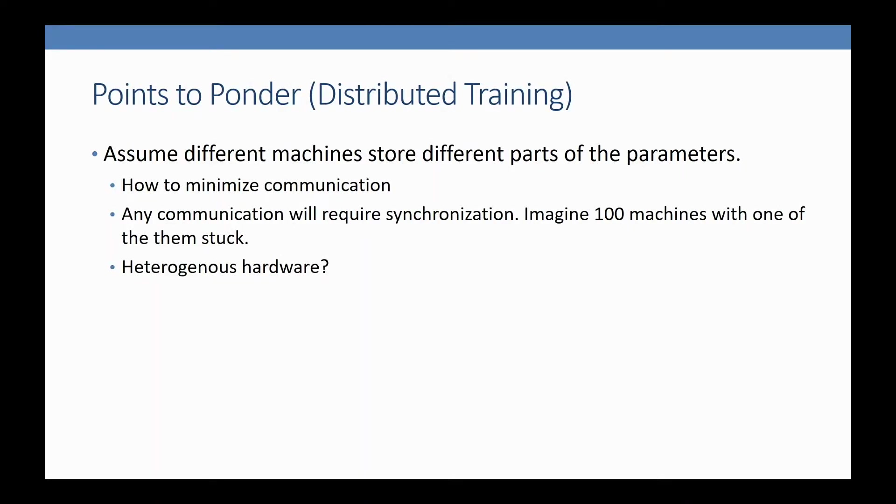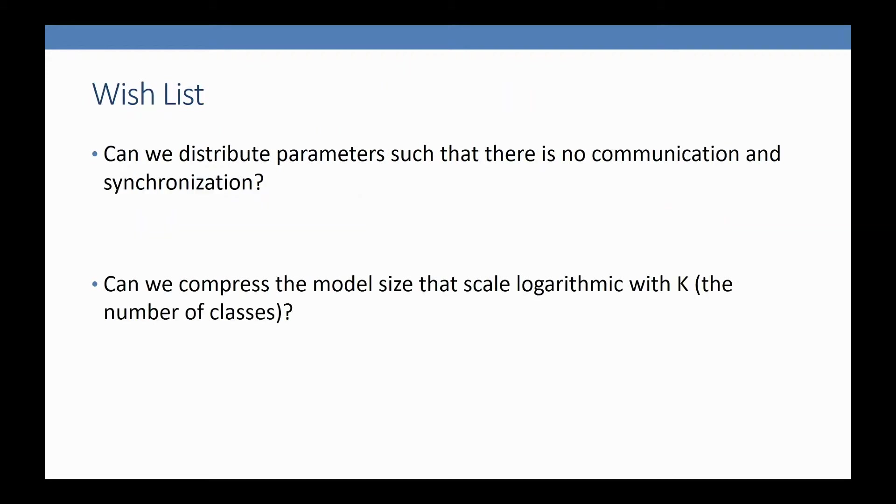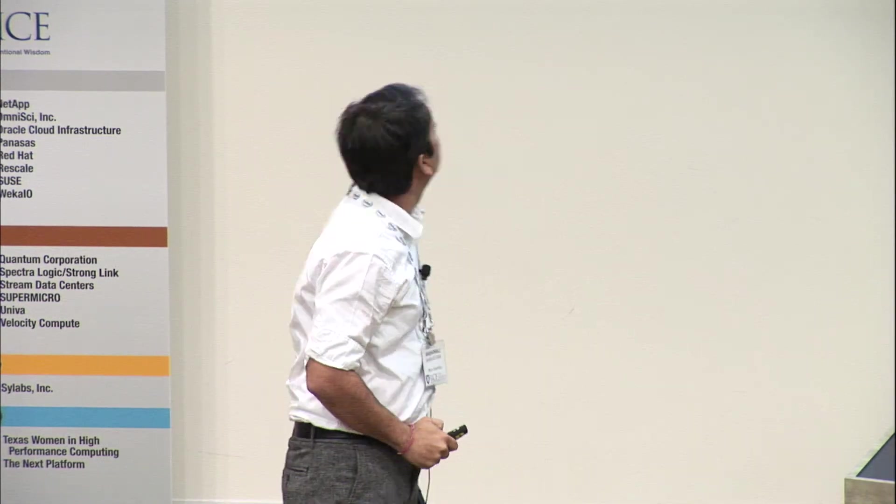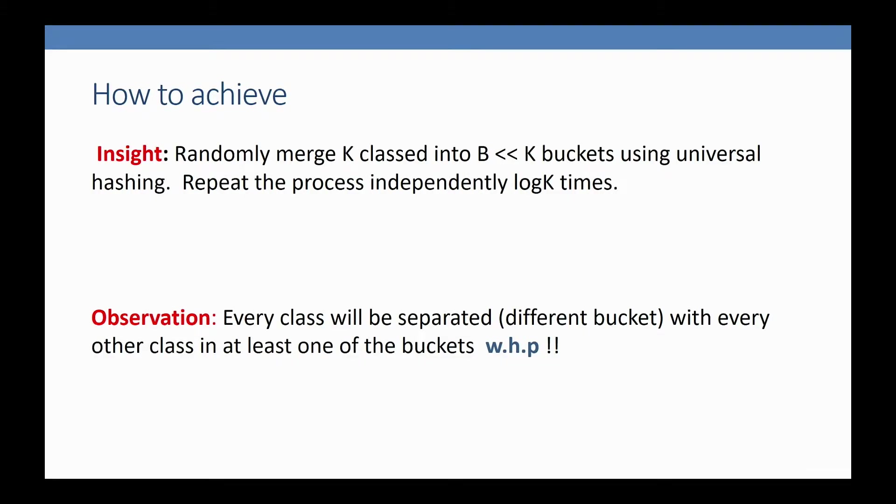In the usual distributed scenario, you have different machines and want to minimize communication, reduce synchronization, and machines could have different compute capability—it could be heterogeneous. Here's a wishlist: Can we distribute parameters such that there's no communication and synchronization? Can we compress the model size that scales logarithmic with K, the number of classes? I'm talking about this because I have a way to do this, at least in this case.